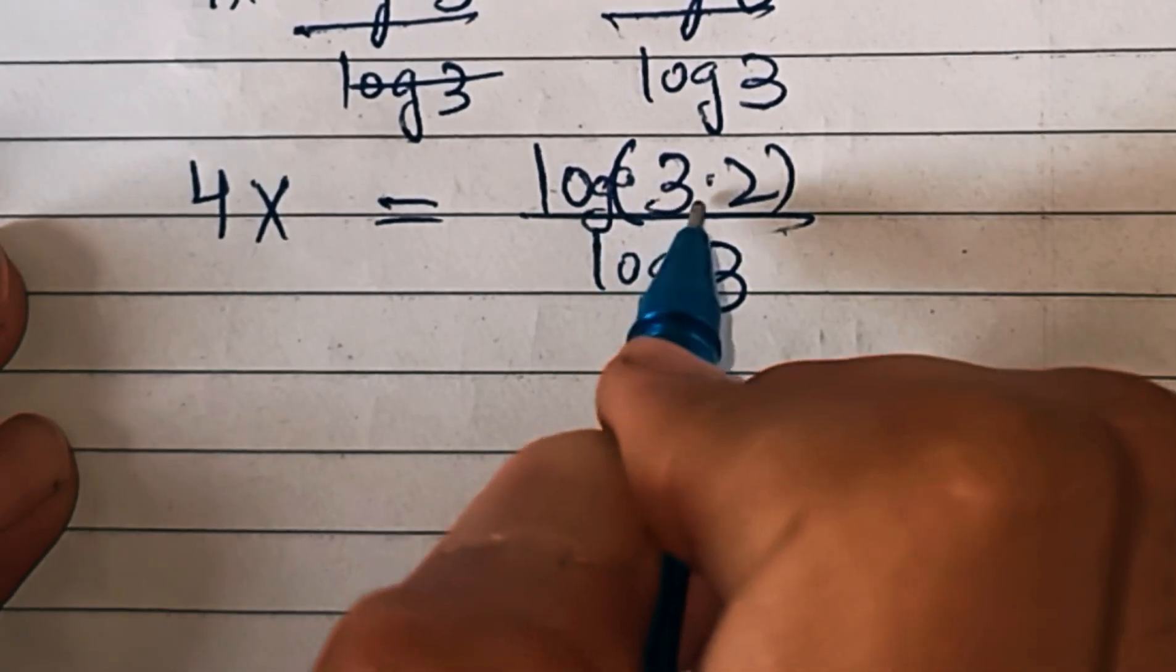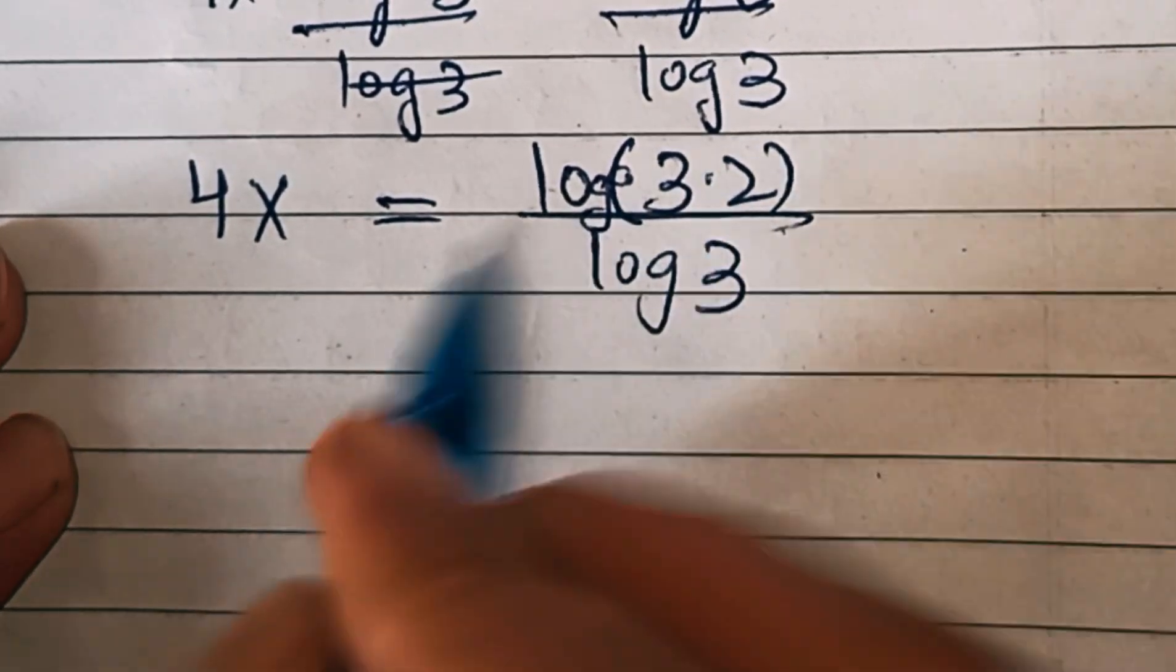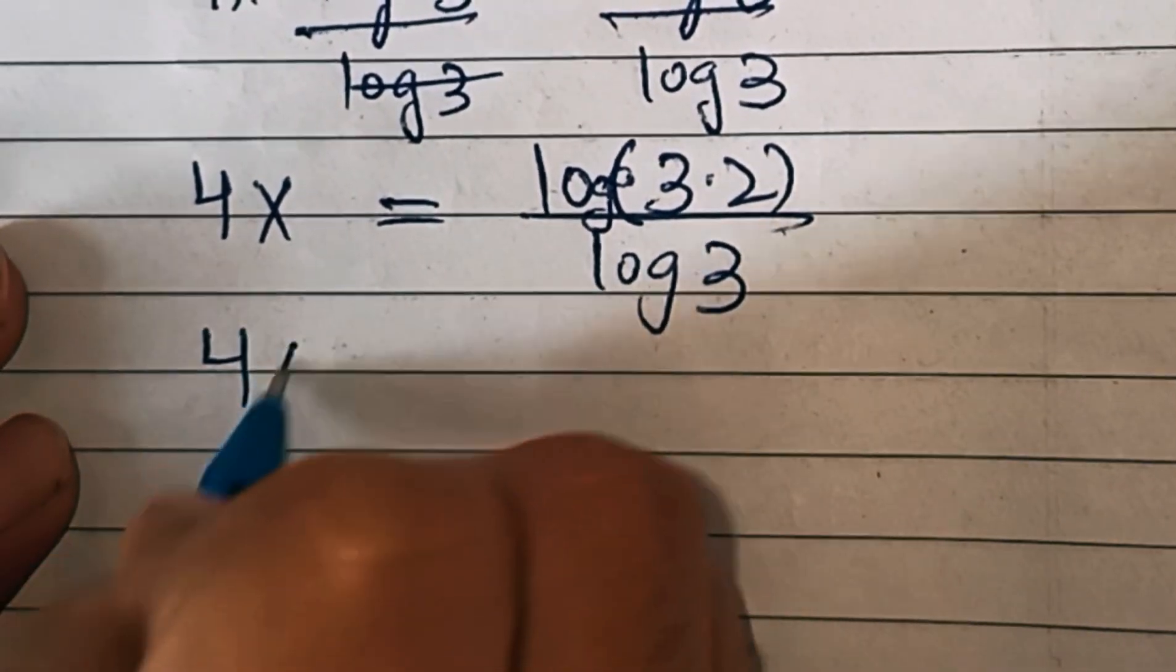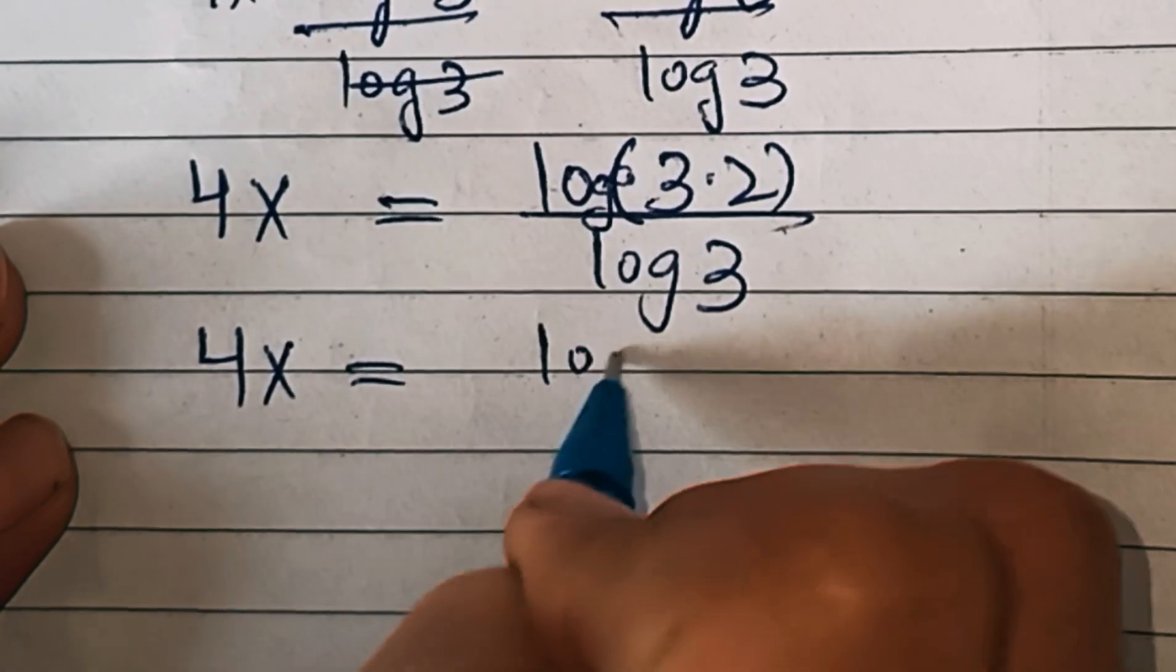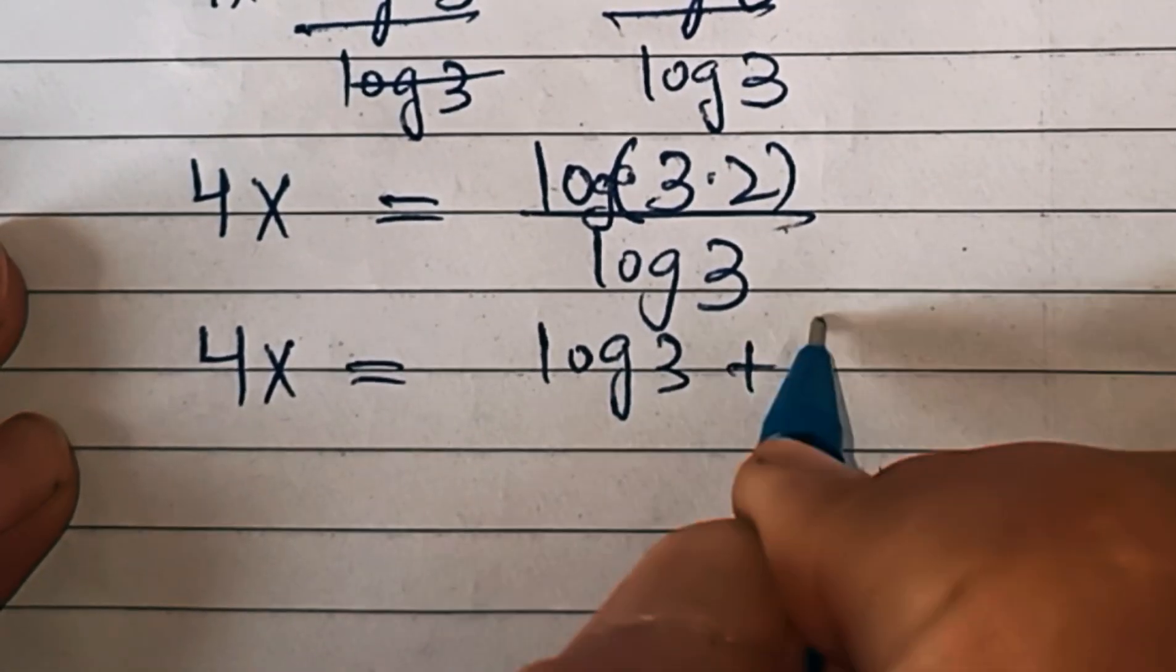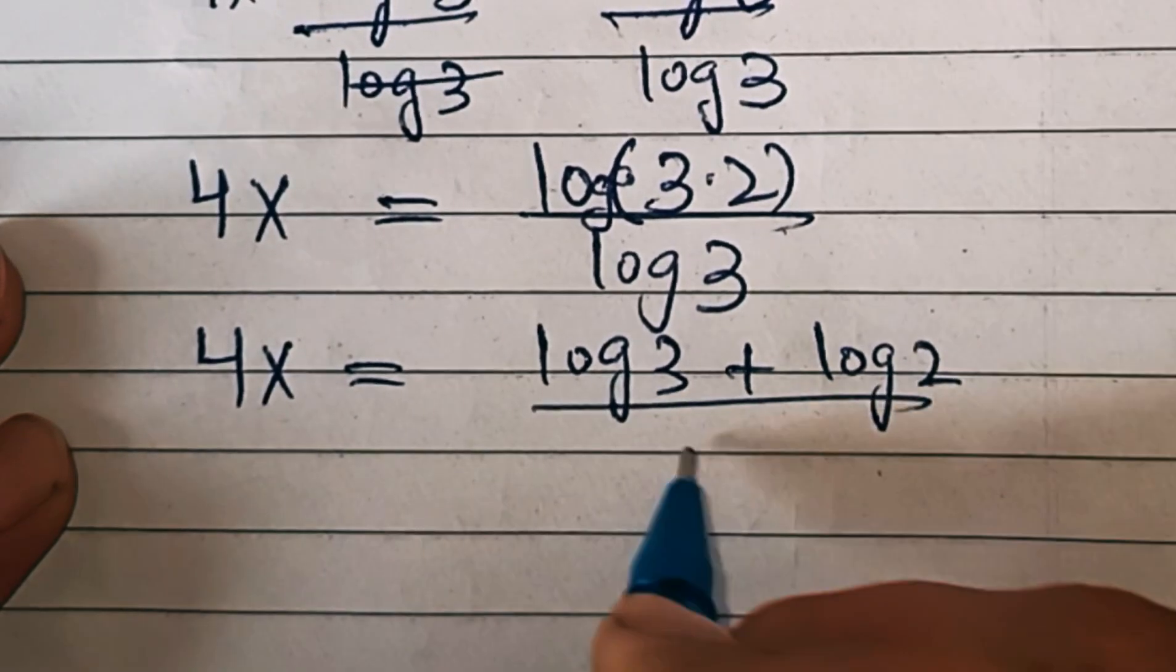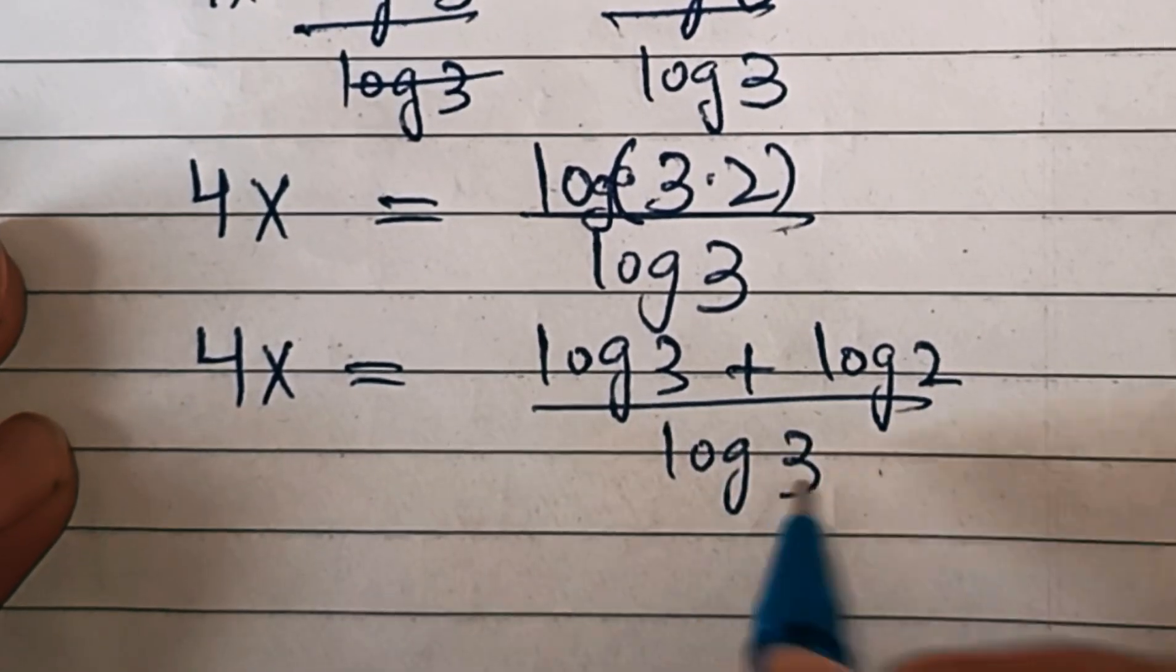We can write log of 3 times 2 as log of 3 plus log of 2, so we have 4x equals log of 3 plus log of 2 over log of 3.